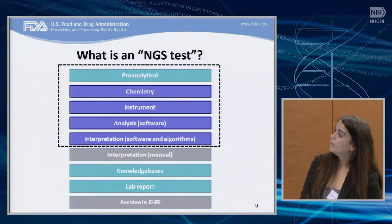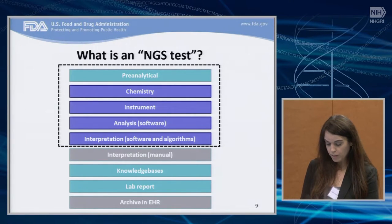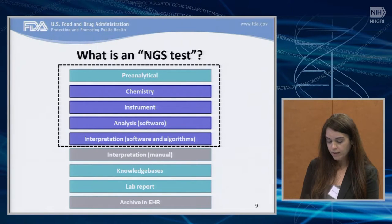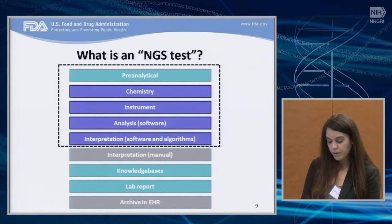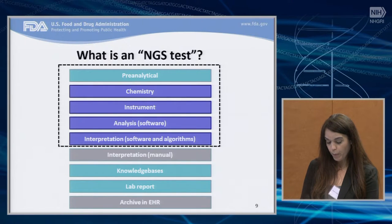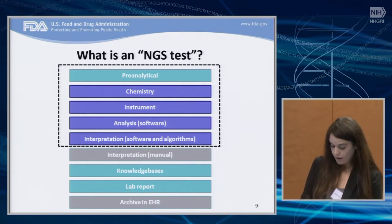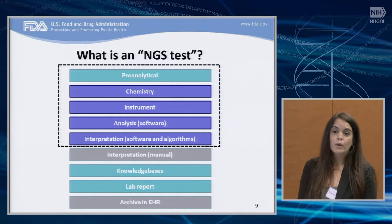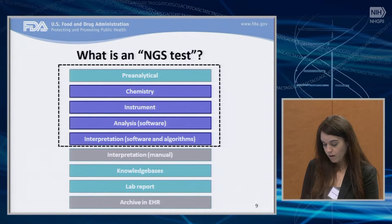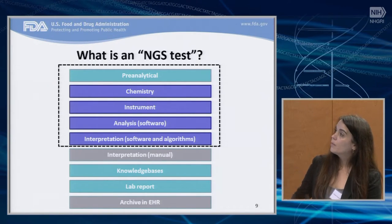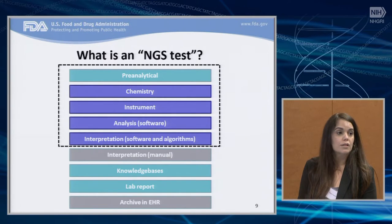We want to give you an idea of what we would consider the device in terms of next-generation sequencing. This slide illustrates the different components that could comprise the test, including the instrumentation, reagents, software, and databases. The device is all of the components that will take a specimen — whether it is DNA, whole blood, saliva, urine, or any other sample type — and transforms it into a result that will be included in the lab report. The area boxed in on this illustration is what we would consider the device, and what we would be looking for information on, either in a pre-submission or in an IDE, in terms of analytical validation.